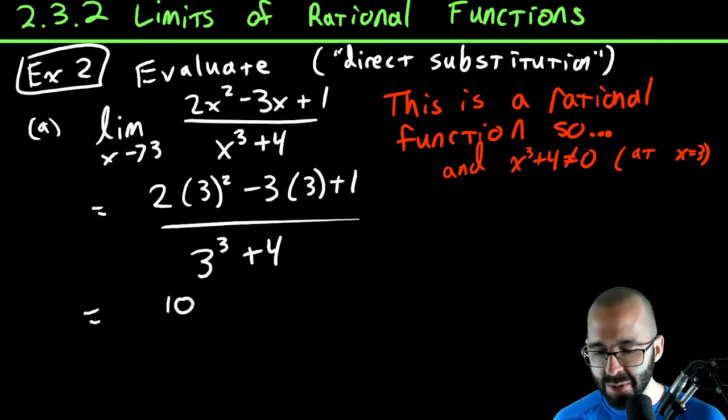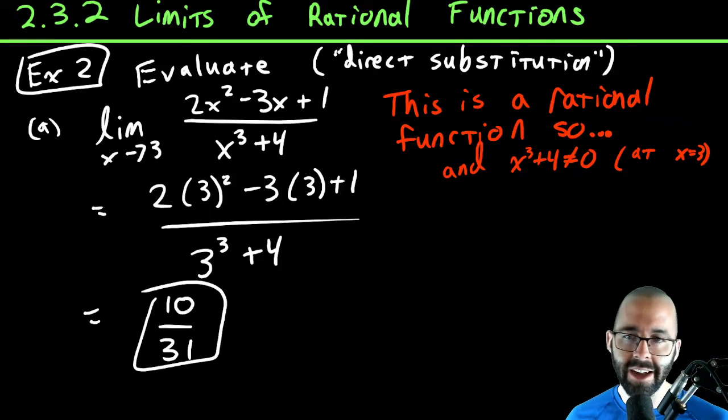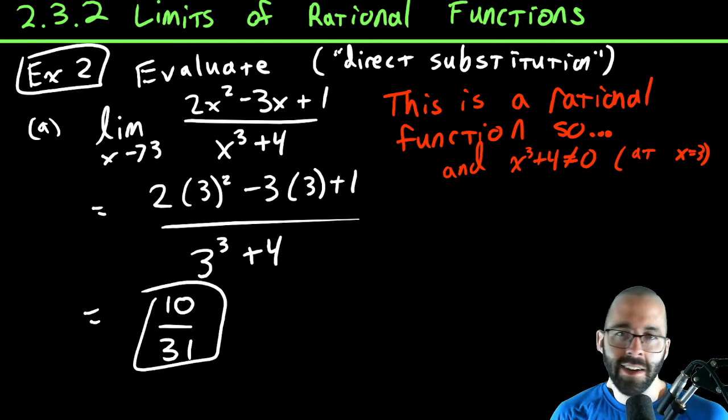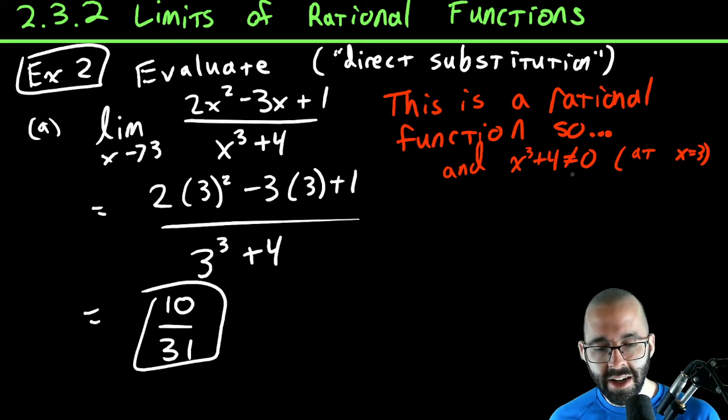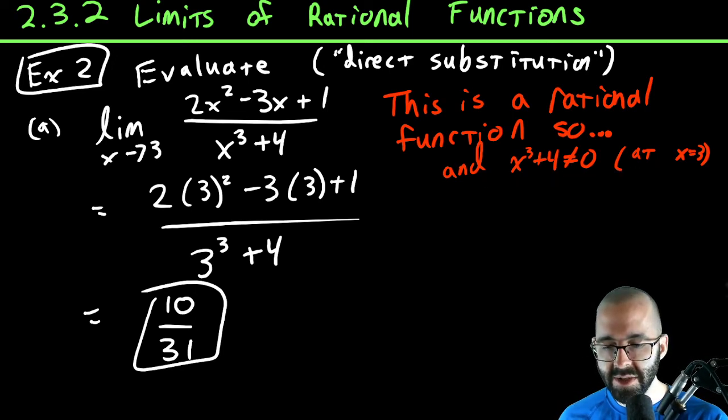Anyway, you can just evaluate this, and again, just like before, it's going to be 10 over 31. That is what it came out to, right? 10 over 31. You could use a calculator here and plug this in. So that's how you use that theorem. That's nice, as long as the denominator is not zero at this point.